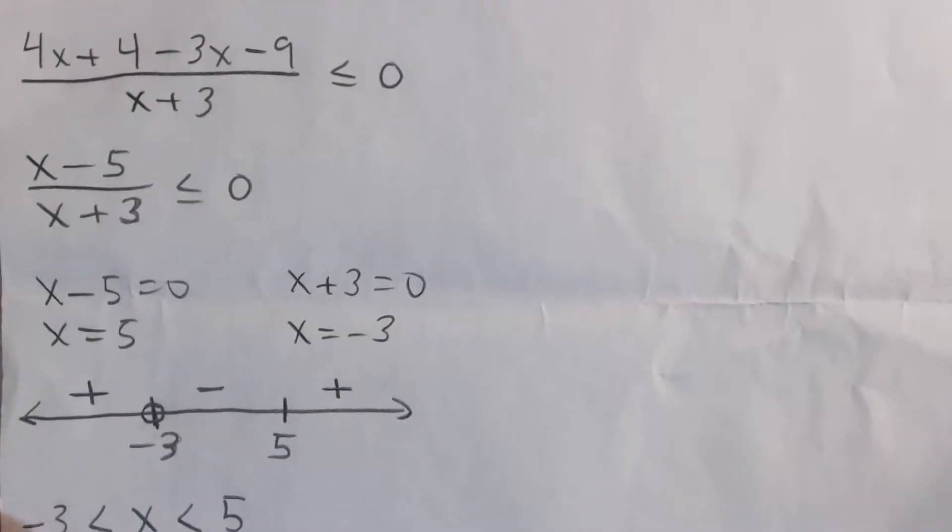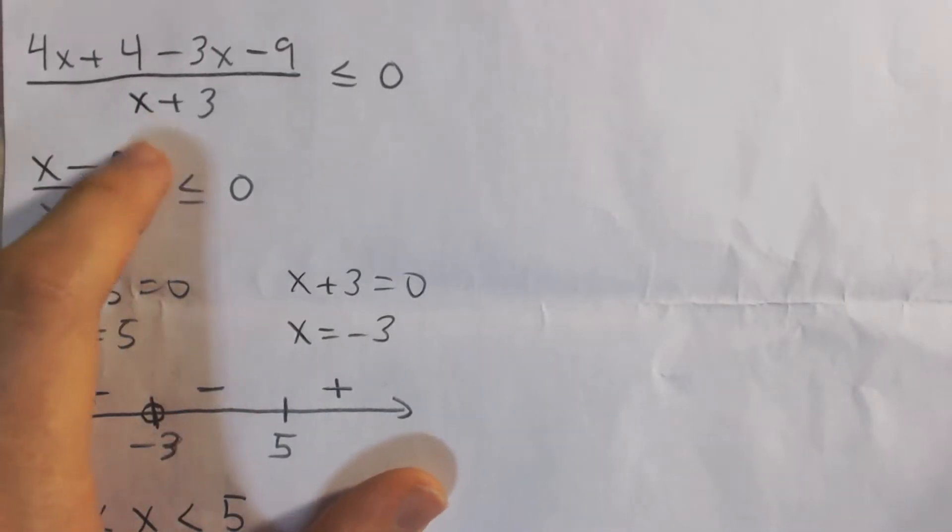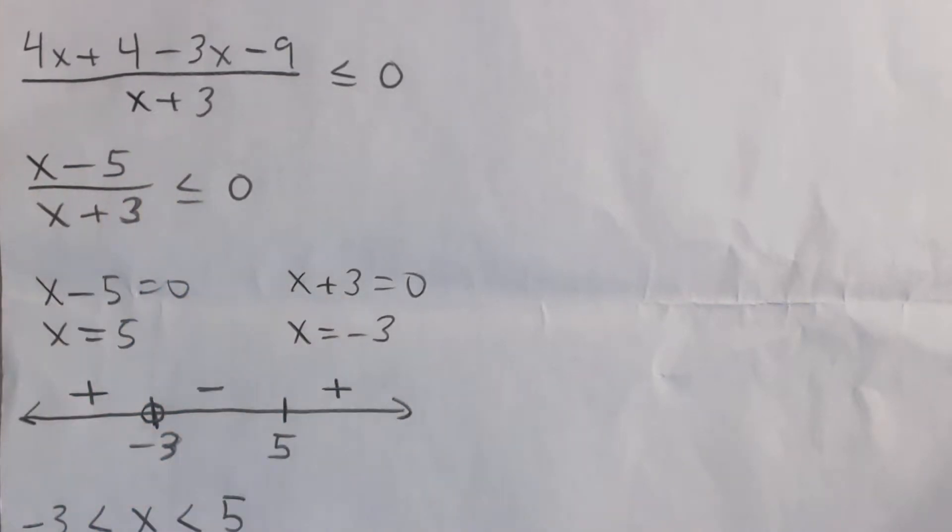And what we can do here, I won't go into too much detail, but basically the only way this can change from negative to positive is when either the numerator is 0 or the denominator is 0. And so if we solve for x in both those cases, we can find possible points where it changes from negative to positive.